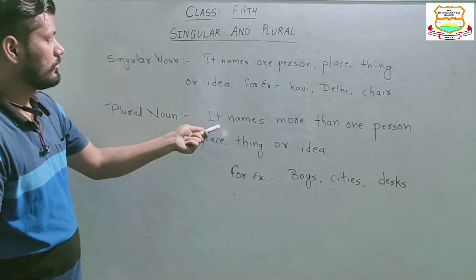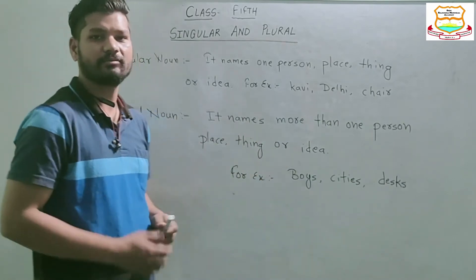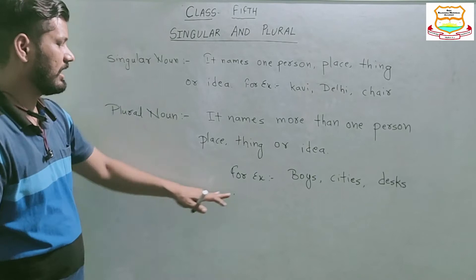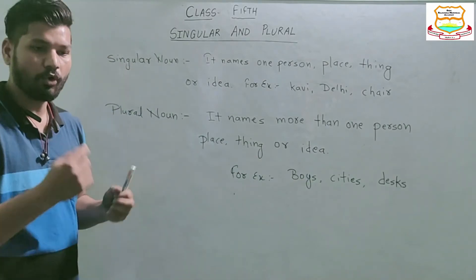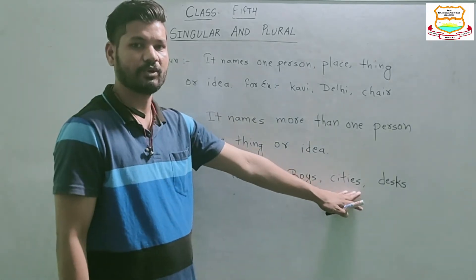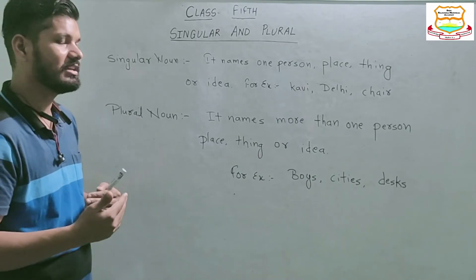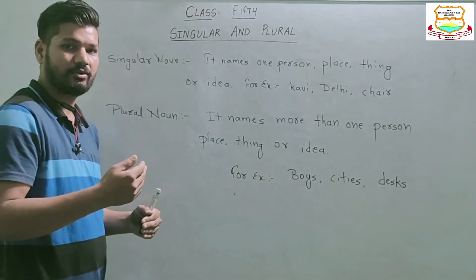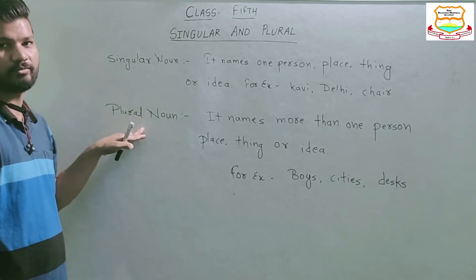Now we come to the plural noun. A plural noun names more than one person, place, thing, or idea. For example, 'boys' represents more than one boy, and 'cities' represents more than one city. These come under the category of plural noun.